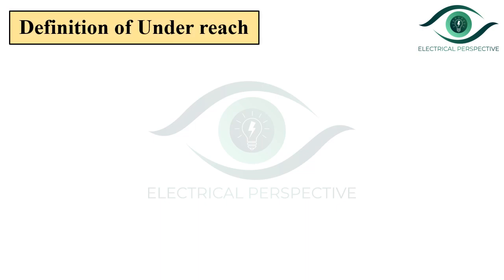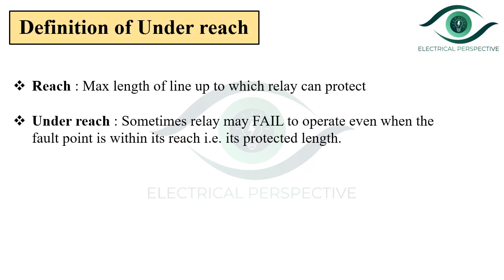Let us revise some basic terms. The reach of the relay means the maximum length of the line up to which the relay can protect. Underreach means sometimes the relay may fail to operate even when the fault point is within its reach, that is within its protected length.